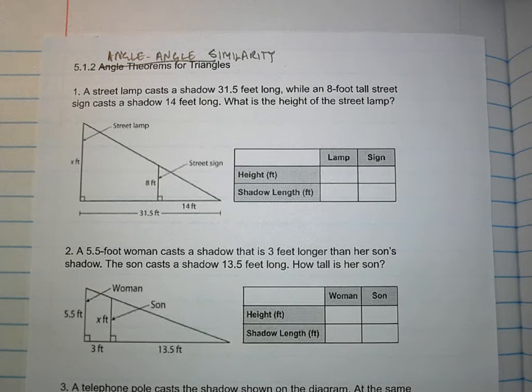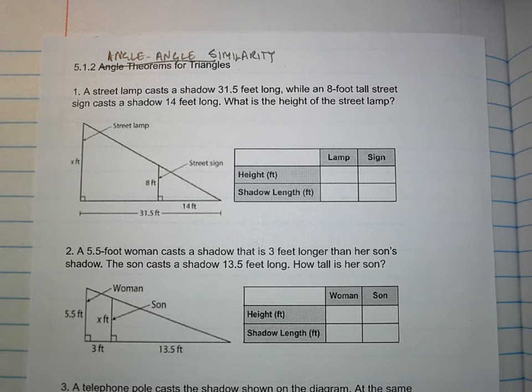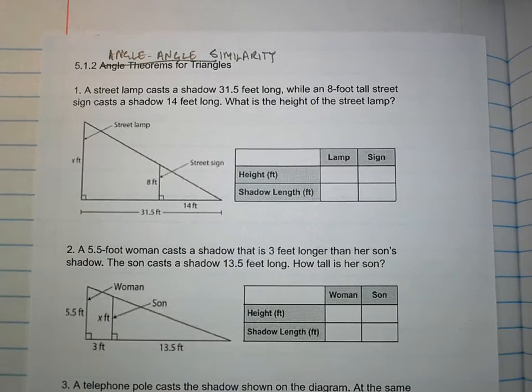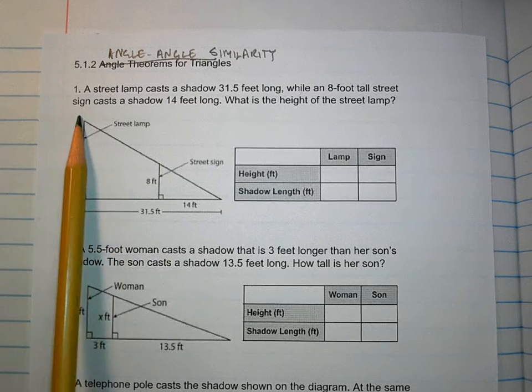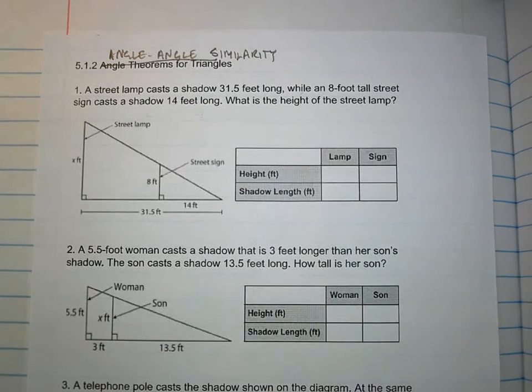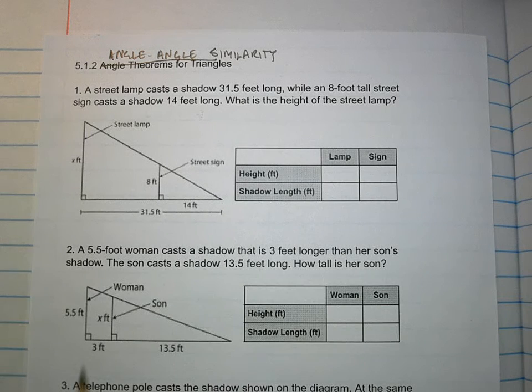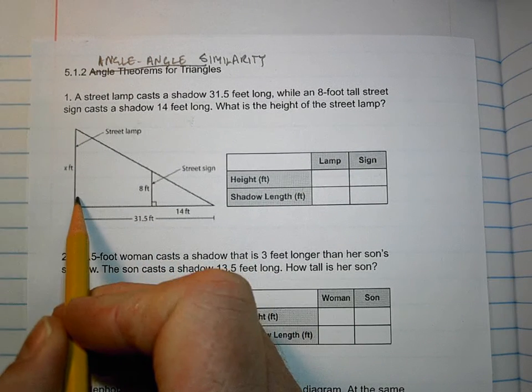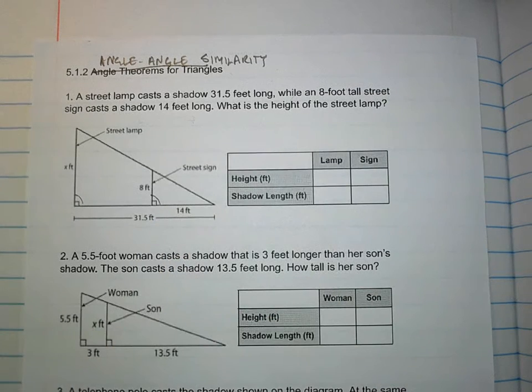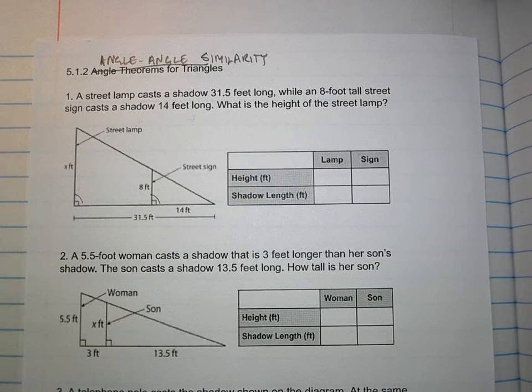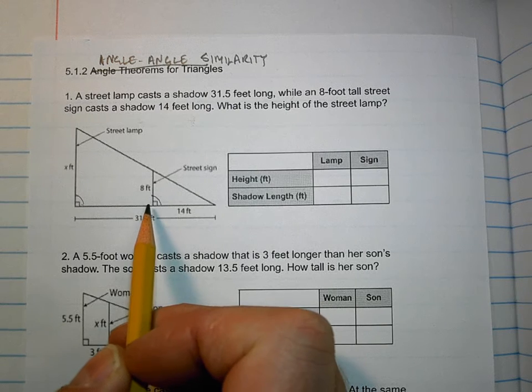Does that make sense? So these exercises, which are ones you'll commonly see, are really more about proportions than they are necessarily about angles. And I made a little table there to help you get it. The table will get you right all the time. So this says a street lamp casts a shadow 31.5 feet long, while an 8-foot street sign casts a shadow 14 feet long. What is the height of the street lamp? It's a proportional relationship, because look at these two triangles. Do they both share this angle? Is that angle the same on both of them? Yes. What is that angle, measure on both of them? 90 degrees.